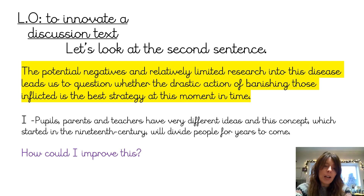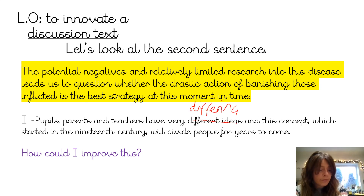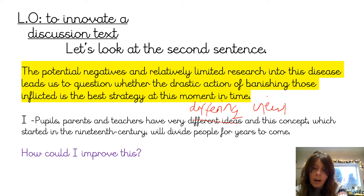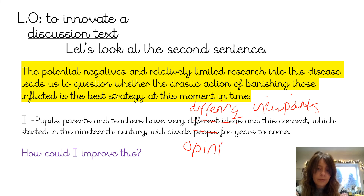To improve, I think I might change 'pupils, parents and teachers have very different ideas.' I might say 'differing concepts' — the word could be 'ideas' or 'uniform' — which started in the 19th century, with my commas correct for extra information, will divide opinions for years to come.